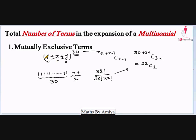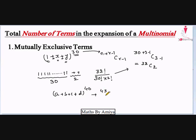Whenever you have mutually exclusive terms, just distribute the power using the direct formula n plus r minus 1 C r minus 1. For example, the total number of terms in the expansion of a plus b plus c plus d raised to power 40 is 40 plus 4 minus 1 C 4 minus 1, which is 43 C 3.